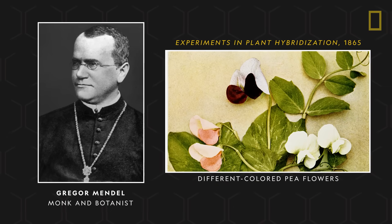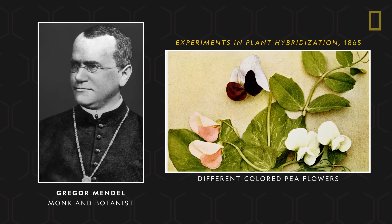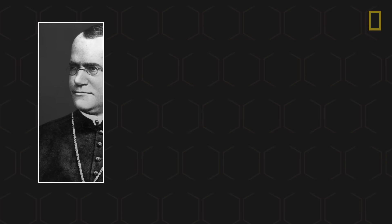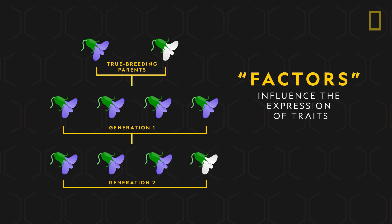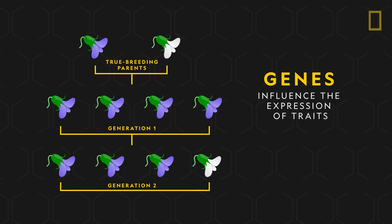Around 1865, Austrian monk and botanist Gregor Mendel published the results of his hybridization studies of pea plants. In his findings, he noted the role of factors that influence the expression of traits. These factors later became known as genes.